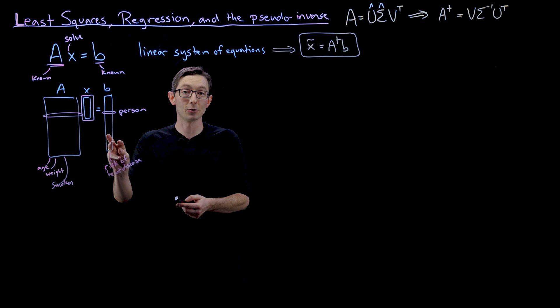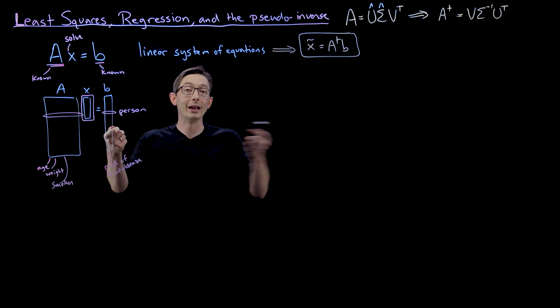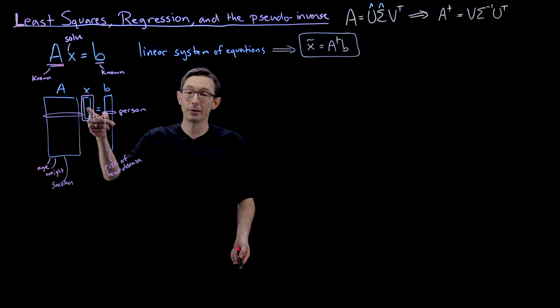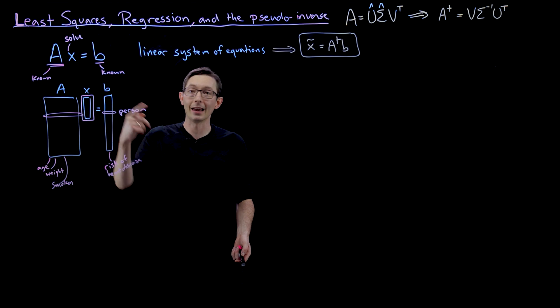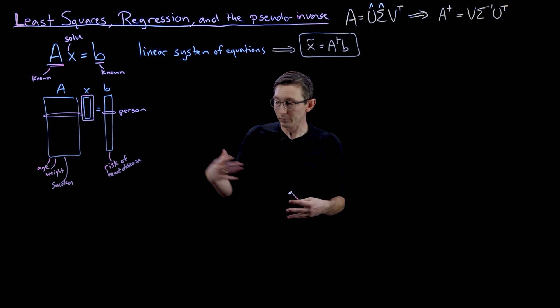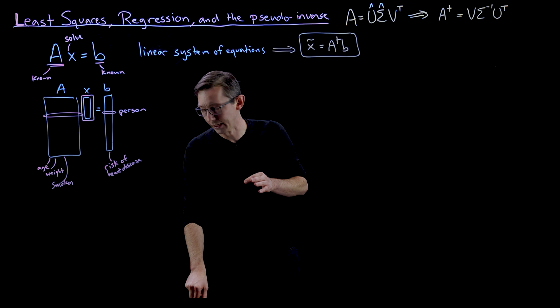instead of having to compute their risk of heart disease, which might be very complicated, I don't want to wait to see if they get it. I just ask them a few questions. I multiply them by this X vector and I get a number, which is hopefully predictive of their future risk of heart disease. So that's the idea.